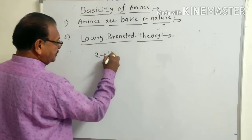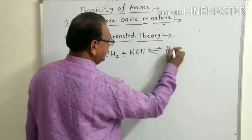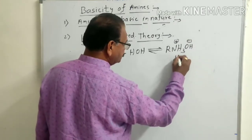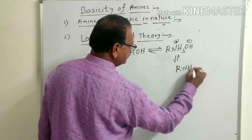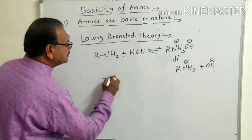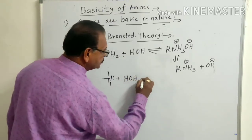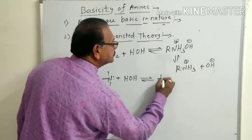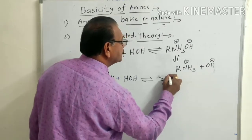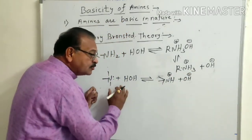For example, RNH2 plus H2O gives RNH3 positive and OH negative. This reaction undergoes dissociation. So: RNH2 + H2O ⇌ RNH3⁺ + OH⁻. This is an equilibrium reaction. The protonated amine formed is called the conjugate acid.